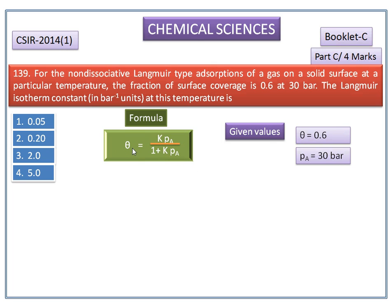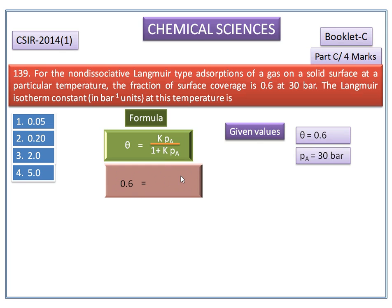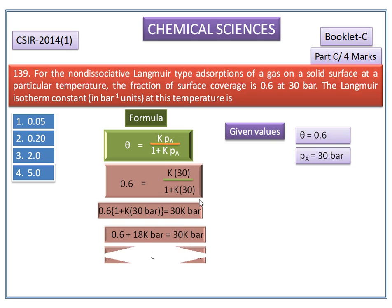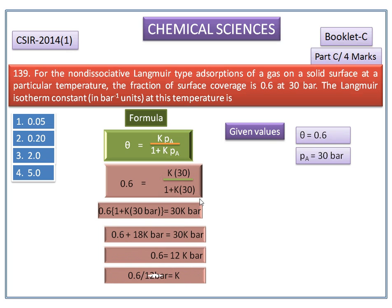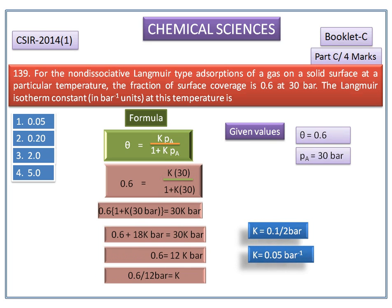We have the theta and Pa values. Substituting these values into the equation, we get 0.6 equals k times 30 divided by 1 plus k times 30. By solving this equation, we get the Langmuir isotherm constant k equal to 0.05 per bar.